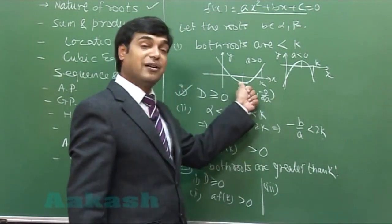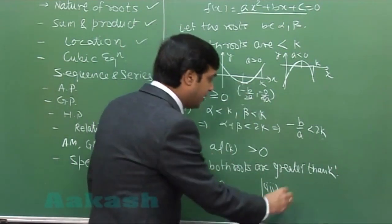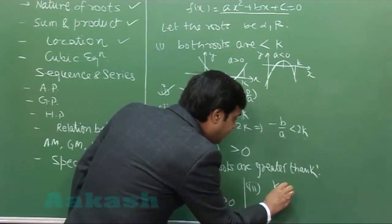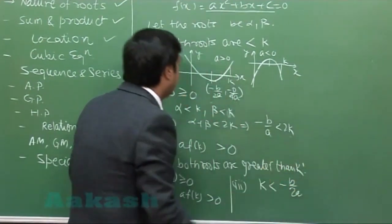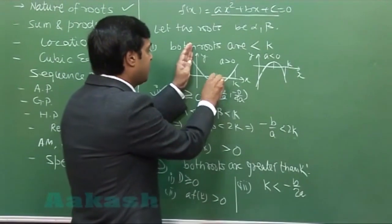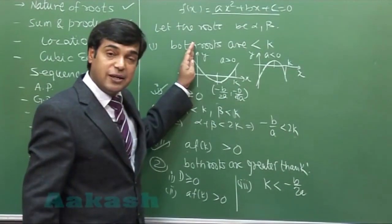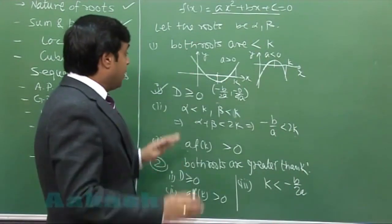Third, from the sum of roots or the vertex, we can see that k is less than -b/2a. This is k and this is -b/2a, so k < -b/2a.